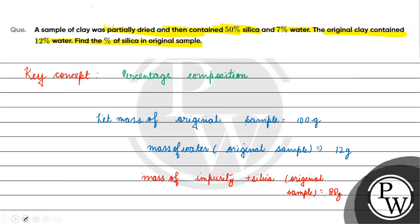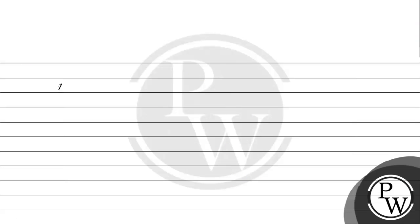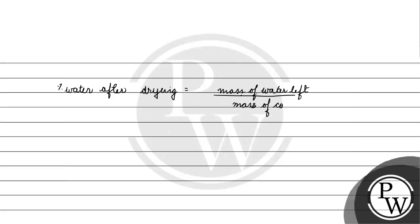We have been given the percentage of water. Now, when the sample is partially dried, the percentage of water after drying equals mass of water left divided by mass of sample after drying, into 100.